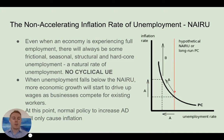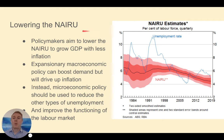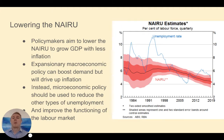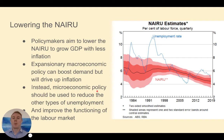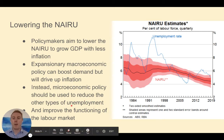What we can do is lower the NIRU. If it's estimated to be around four and a half to five percent, we want to keep lowering it so there's more capacity to have lower unemployment without inflation. Policymakers aim to lower the NIRU to grow GDP with less inflation. Expansionary macroeconomic policy can boost demand but will drive up inflation. Instead, microeconomic policy should be used to reduce the other types of unemployment — aiming to improve structural, frictional, seasonal, and hardcore unemployment.